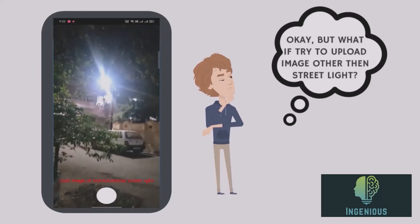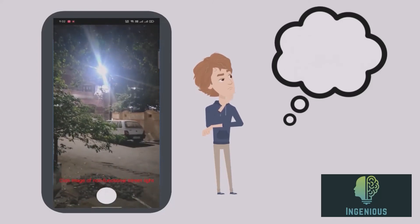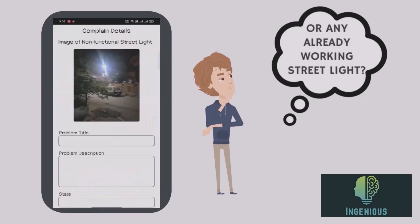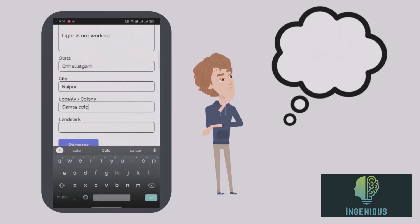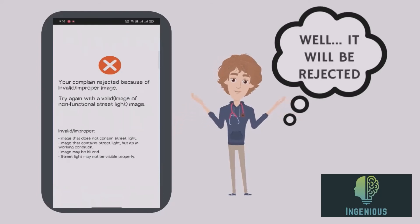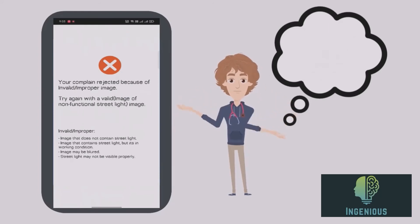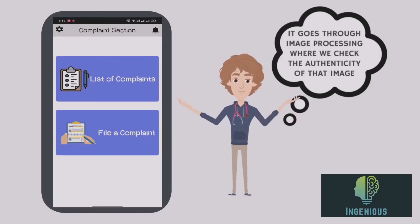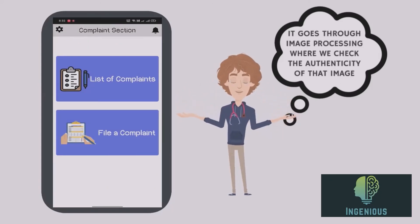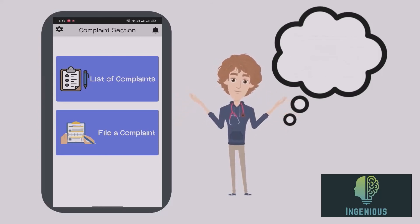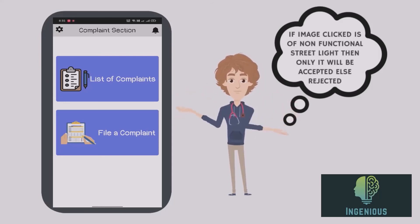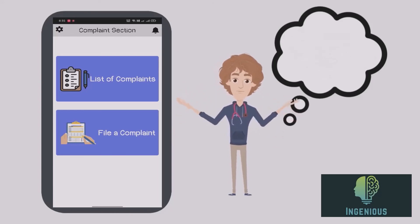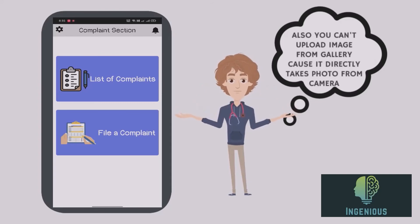But what if you try to upload an image other than a street light, or of an already working street light? Well, it will be rejected. When you upload an image, it goes through image processing where we check the authenticity of that image — if it is of a non-functional street light, only then it will be accepted, else rejected. Also, you can't upload from the gallery; it directly takes a photo from the camera.